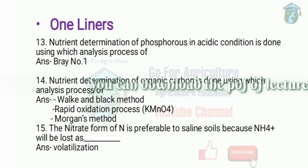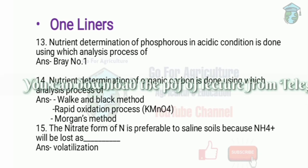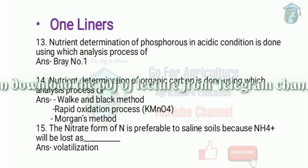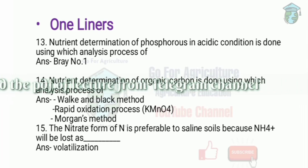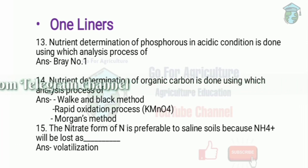Nitrate form of nitrogen is preferable for saline soil because NH4+ will be lost through volatilization. For available nitrogen, we measure using the alkaline permanganate method. To determine total nitrogen in soil, we use the Kjeldahl process.